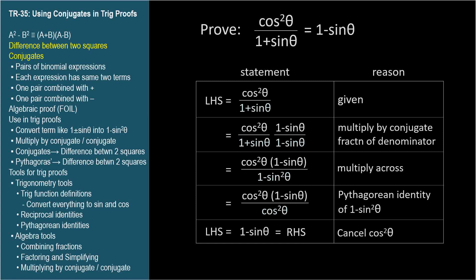Let's look at the fraction denominator for each step. I'm showing it in blue. We started with 1 plus sine theta, then we multiplied by its conjugate, 1 minus sine theta. This yields the corresponding difference between two squares, 1 minus sine squared theta. Using the Pythagorean substitution, 1 minus sine squared theta equals cosine squared theta, and that was the key to proving this identity.